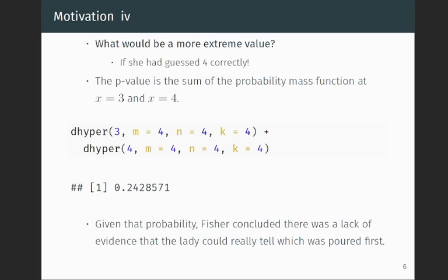Well, a more extreme value would be if she had guessed 4 correctly. So if she had guessed everything correctly. And so the p-value would be the sum of the probability mass function at x equals 3 and x equals 4. And so if we compute those two quantities and add them up, like I'm doing here in the R code, we get a p-value of 0.24.